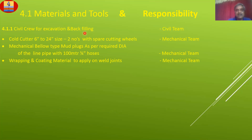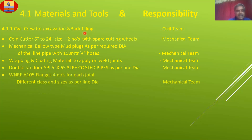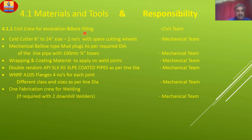Wrapping and coating material to apply on weld joints. Double random API 5L X65, 3LPE coated pipes as per line data and line diameter. Weld lap flanges — 4 numbers — different classes and sizes as per the line diameter. One fabrication team required for welding — it requires 2 downhill welders.